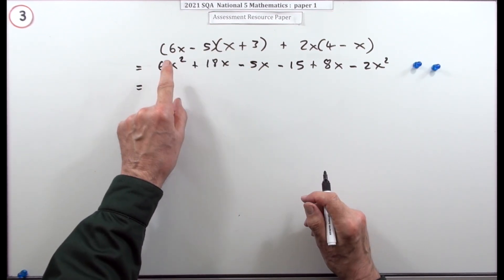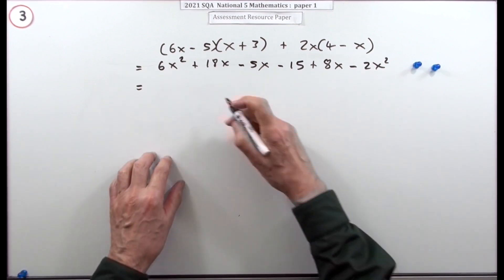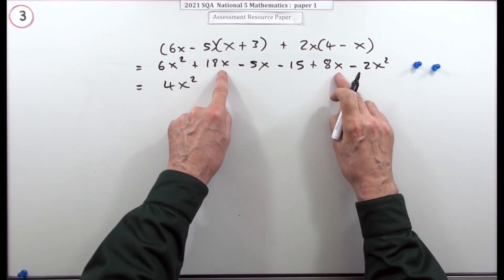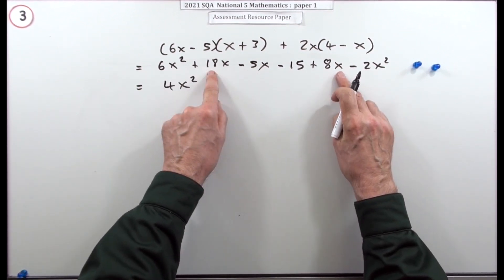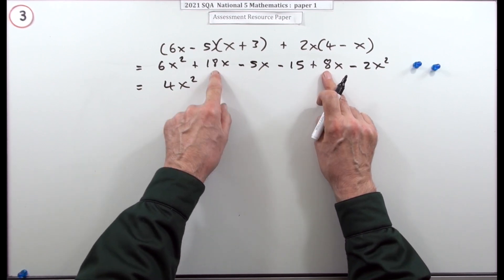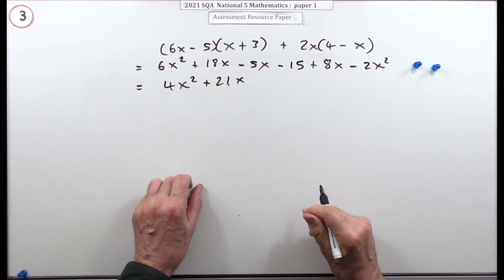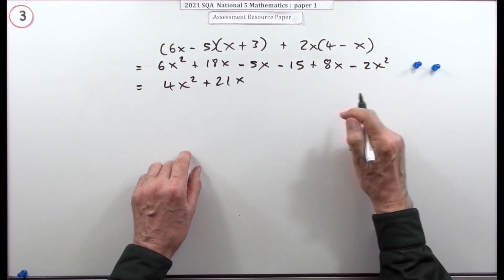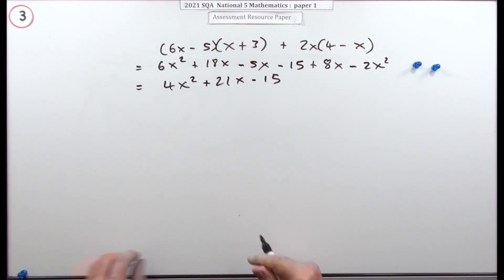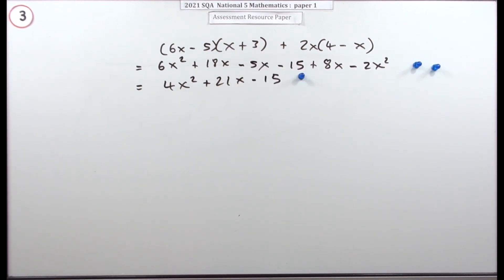Now tidy up. For x squared terms: 6 take away 2 gives 4x squared. For x terms: 18x minus 5x plus 8x gives 21x. For number terms, you've only got minus 15. So the final answer is 4x squared plus 21x minus 15, and that's the final mark.